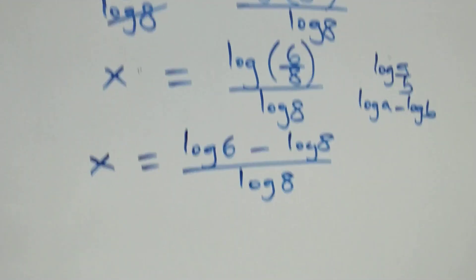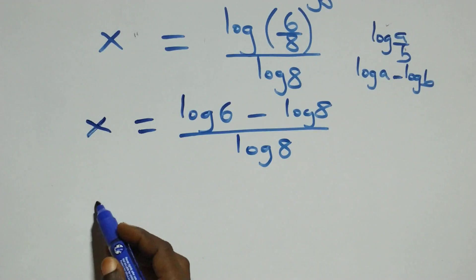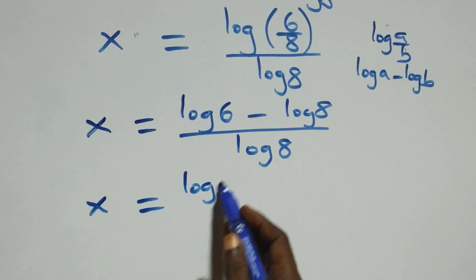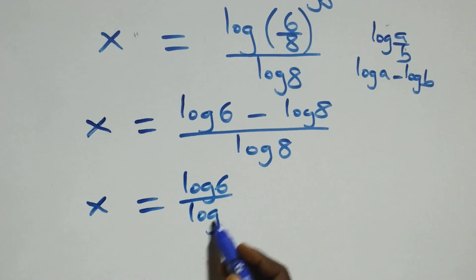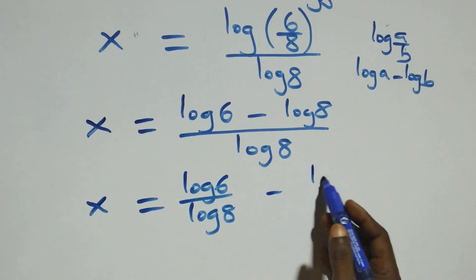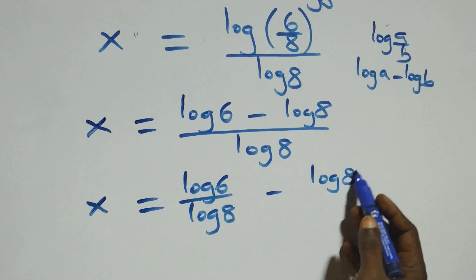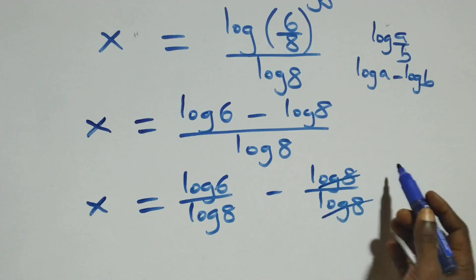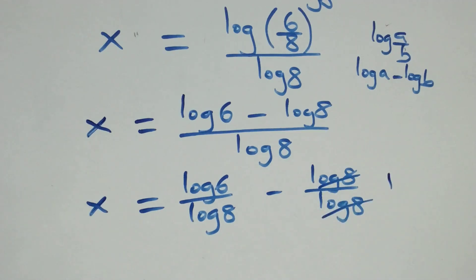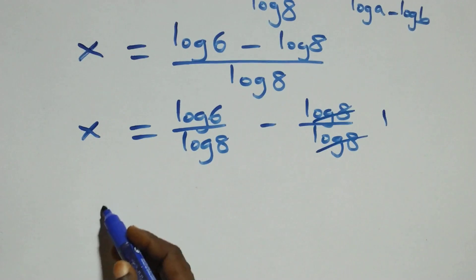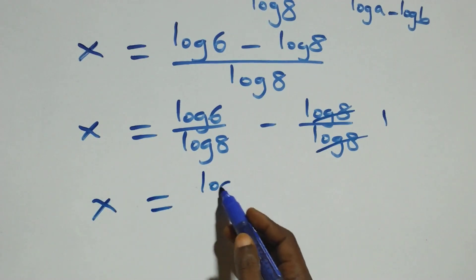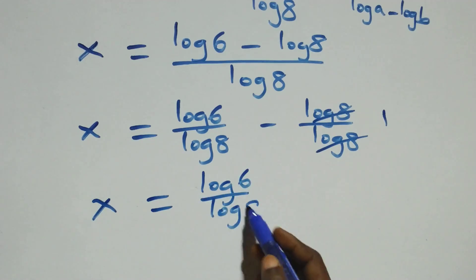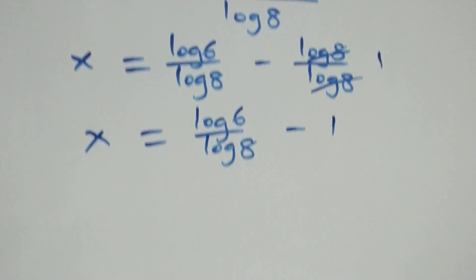The next step: we separate this into two fractions and we have x equals log 6 over log 8 minus log 8 over log 8. Here log 8 cancels each other, we have 1 left, which implies this becomes x equals log 6 over log 8 minus 1.